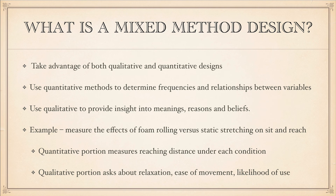Many studies use some aspect of both qualitative and quantitative and therefore fall into this mixed method design category. For example, a student project I'm currently supervising is looking at the effects of foam rolling and how it relates to performance on the sit-and-reach test — comparing foam rolling versus static stretching. The quantitative portion measures reaching distance under each condition: how far can a person reach after foam rolling their hamstrings, after static stretching, and compared to a control where they haven't stretched at all.